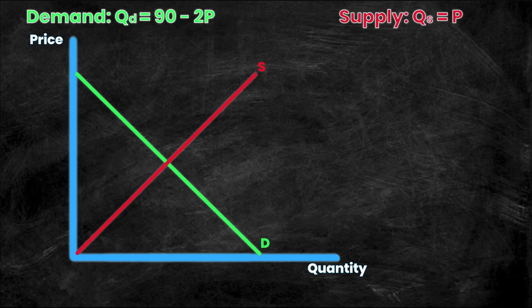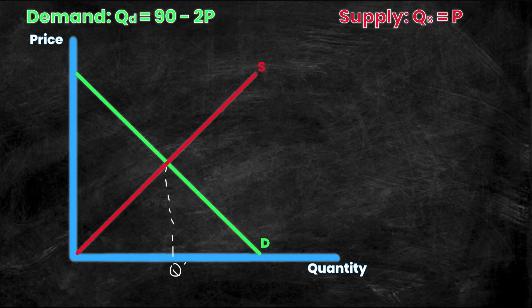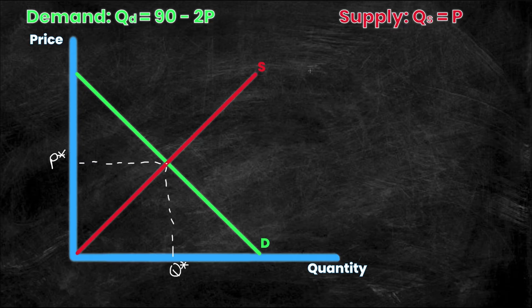The first thing I want to do is find the equilibrium. If you don't remember how to do this, we have a video specifically dedicated to using these equations to calculate equilibrium quantity and price. In this video we'll assume you know how to do that already. At the point of equilibrium, quantity demanded is equal to quantity supplied — that's how we're going to start.